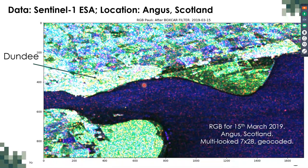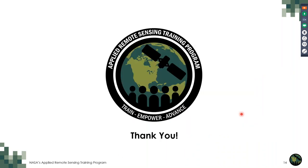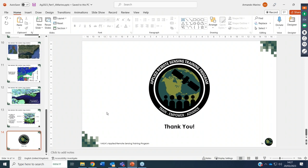This is how the area looks with the Sentinel-1 data — an RGB image obtained using the two polarizations, taken in 2019. The city of Dundee is visible here. During this practical, we will focus on a small area of the dataset — a 500 by 500 pixel snippet — to allow you to run on machines that may not be very powerful. Inside this snippet you can see agricultural fields, an urban area which is actually a town on the side of Dundee, pasture and marshes, and the sea area.